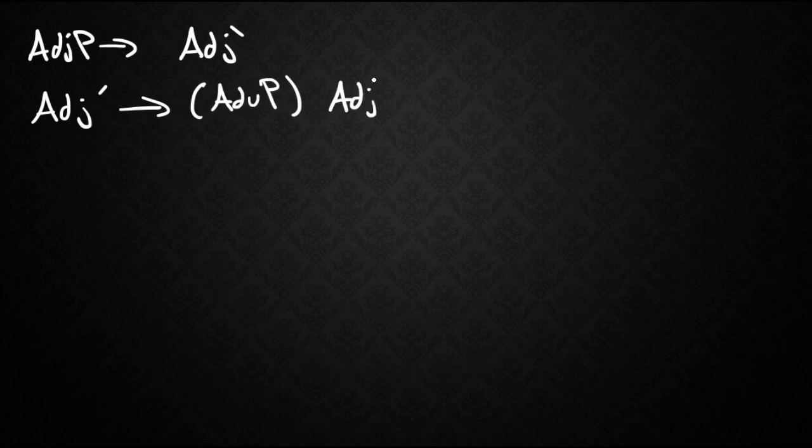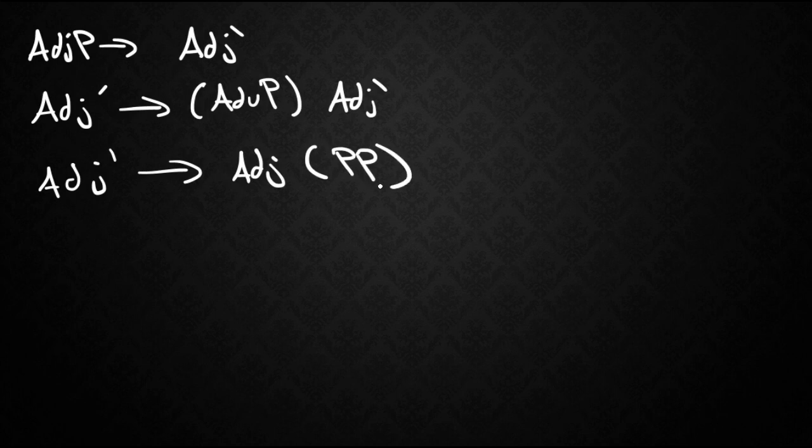So now let's try to spell out the rules for the adjective phrase. The maximal projection gives rise to an adjective bar. If you noticed in the previous example there was no specifier to adjective phrase. The adjective bar gives rise to an optional adverb phrase and another adjective bar. Then our adjective bar which introduces the heads would give me the adjective and an optional prepositional phrase.